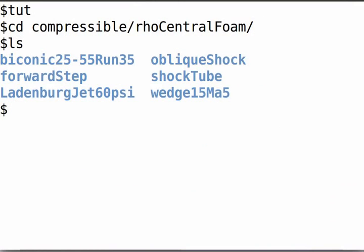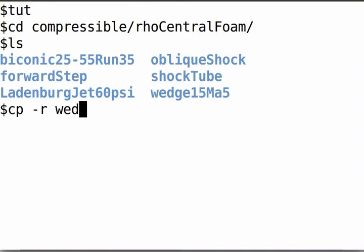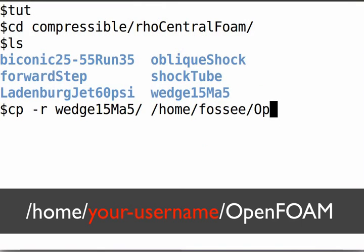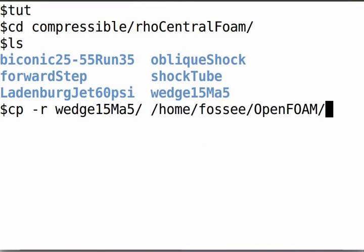Copy the wedge15Ma5 case directory into your OpenFoam directory by typing: cp -r wedge15Ma5 followed by the path of your OpenFoam directory, then press enter.